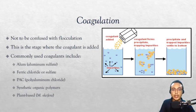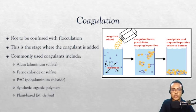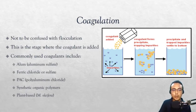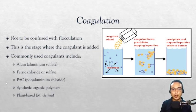After pH control and pre-chlorination, we have coagulation. Coagulation is part of the trio responsible for the actual cleaning of the water. It is important not to confuse coagulation with flocculation — they are two different processes often lumped together. Upon adding a coagulant into water, it solubilizes and attracts suspended impurities, causing them to clump together for easier removal. Commonly used coagulants include alum (aluminum sulfate), ferric chloride, ferric sulfate, polyaluminum chloride, other synthetic organic polymers, and plant-based coagulants such as those extracted from Moringa oleifera seeds.